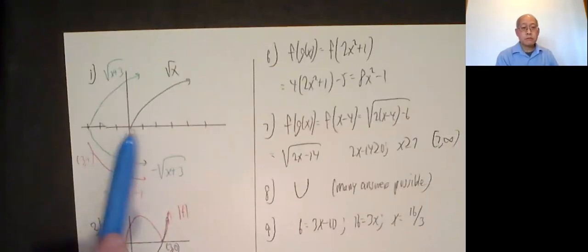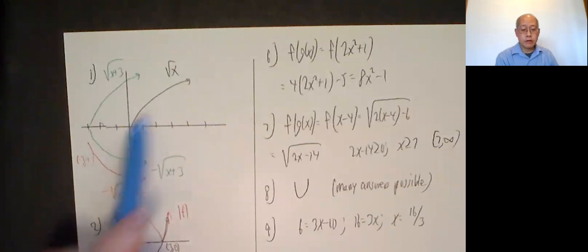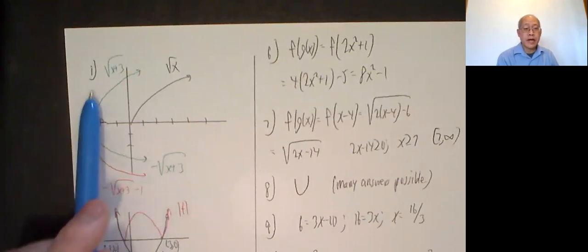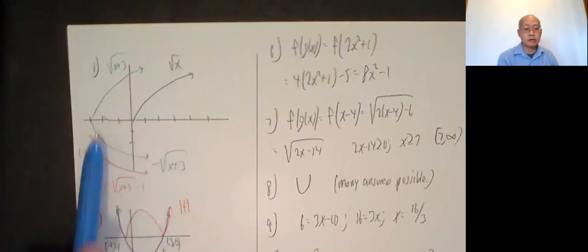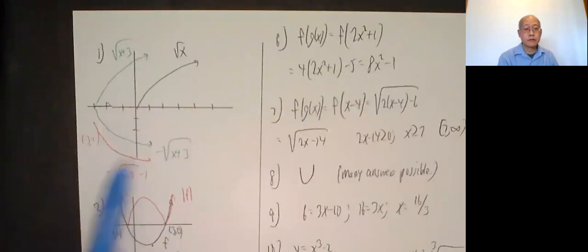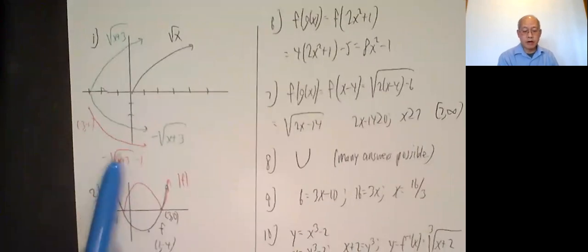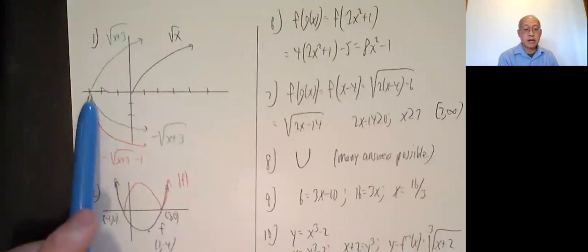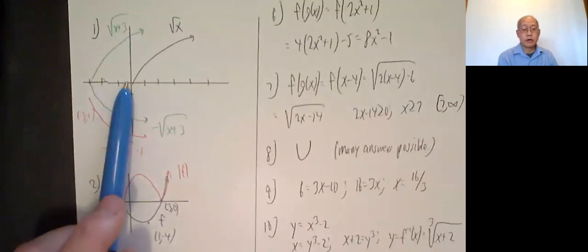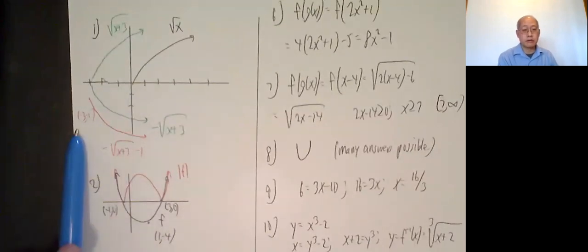Okay, number 1. Start with the basic square root function, then square root of x plus 3 moves the graph 3 units to the left. The negative of that, negative radical x plus 3, is just a reflection across the x-axis of this graph. And then negative radical x plus 3 minus 1 takes this graph and shifts it down one unit. So the point originally was 0, 0, it's now negative 3 and negative 1.